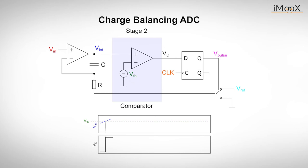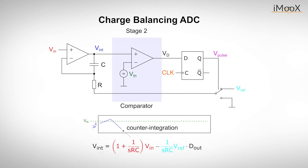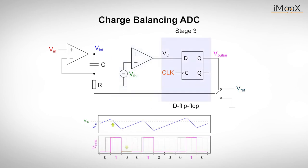In this case, the comparator then triggers a so-called D flip-flop, which sets its output high at the next rising edge of the clock. This in turn leads to a counter integration process. A certain amount of charge is sucked off over the time of a clock cycle. If Vint falls below the threshold voltage, the output is low at the next clock cycle. Otherwise, counter integration continues.